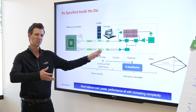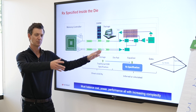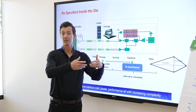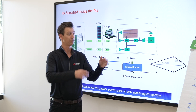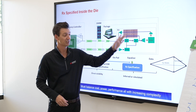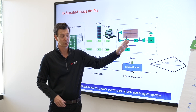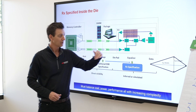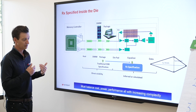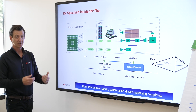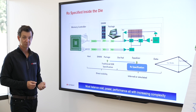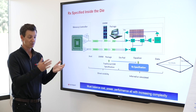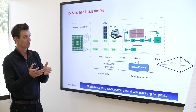In simulation, I can see anywhere I want — I can simulate after the equalization. But in measurement, I can only measure at the physical access point. What test and measurement equipment needs to do is apply the equalization as a transfer function, so I can see what the signal is going to look like after the fact. So clearly this is a pretty big disruption in the way you simulate and the way you test.